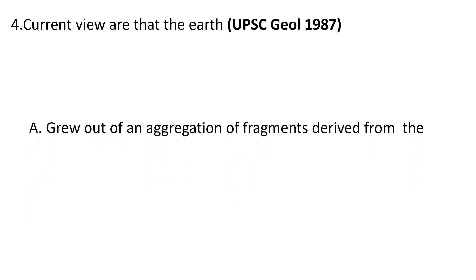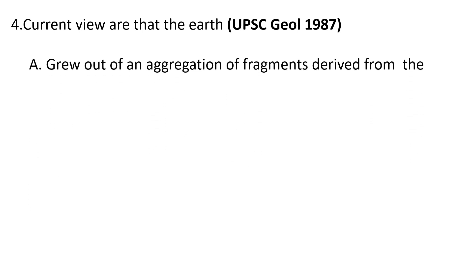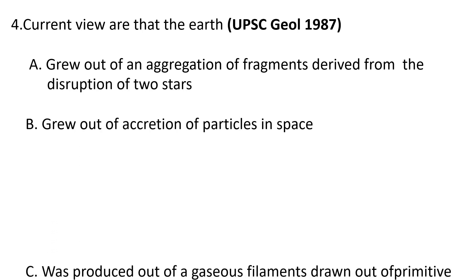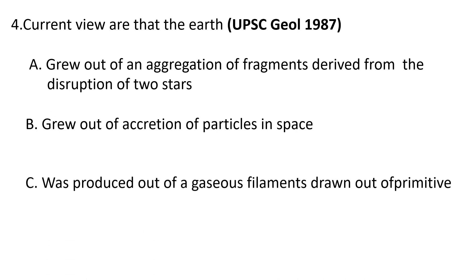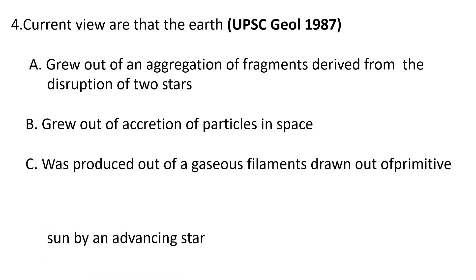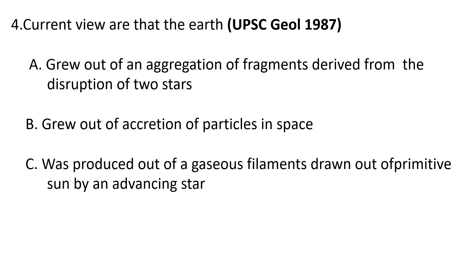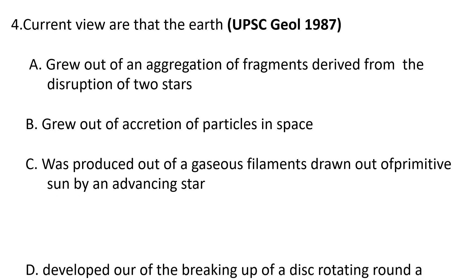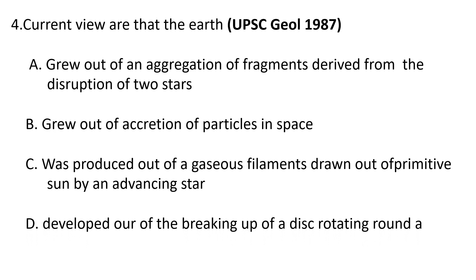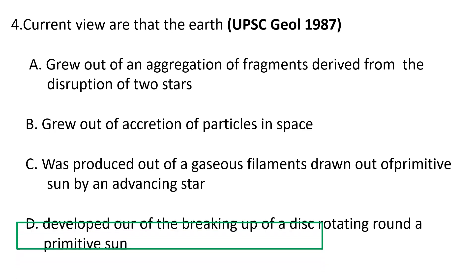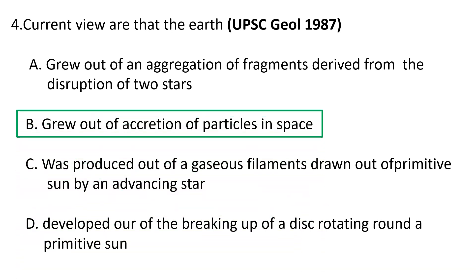Fourth question: current views are that the Earth — choices are: a) grew out of an aggregation of fragments derived from the disruption of two stars, b) grew out of accretion of particles in space, c) was produced out of gaseous filaments drawn out of the primitive sun by an advancing star, and d) developed out of the breaking up of a disc rotating around a primitive sun. The correct answer is b) grew out of accretion of particles in space.